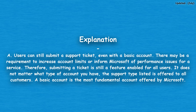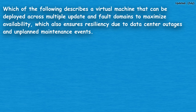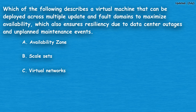A basic account is the most fundamental account offered by Microsoft. The next question: which of the following describes a virtual machine that can be deployed across multiple update and fault domains to maximize availability, which also ensures resiliency due to data center outages and unplanned maintenance events? Option A: availability zone. Option B: scale sets. Option C: virtual networks. Option D: virtual network gateways.